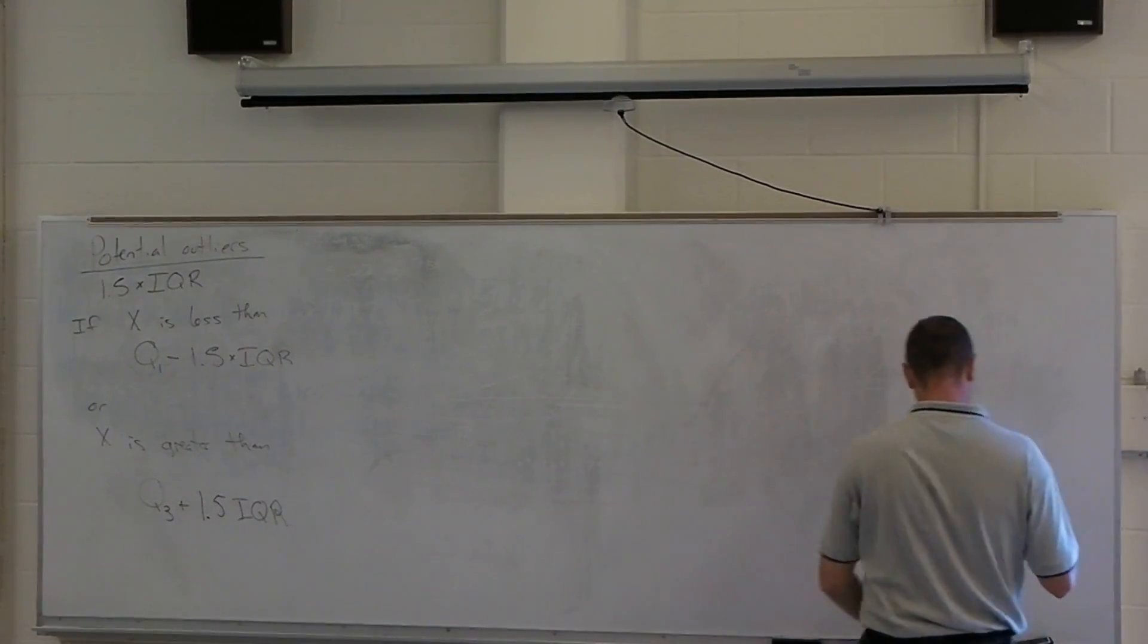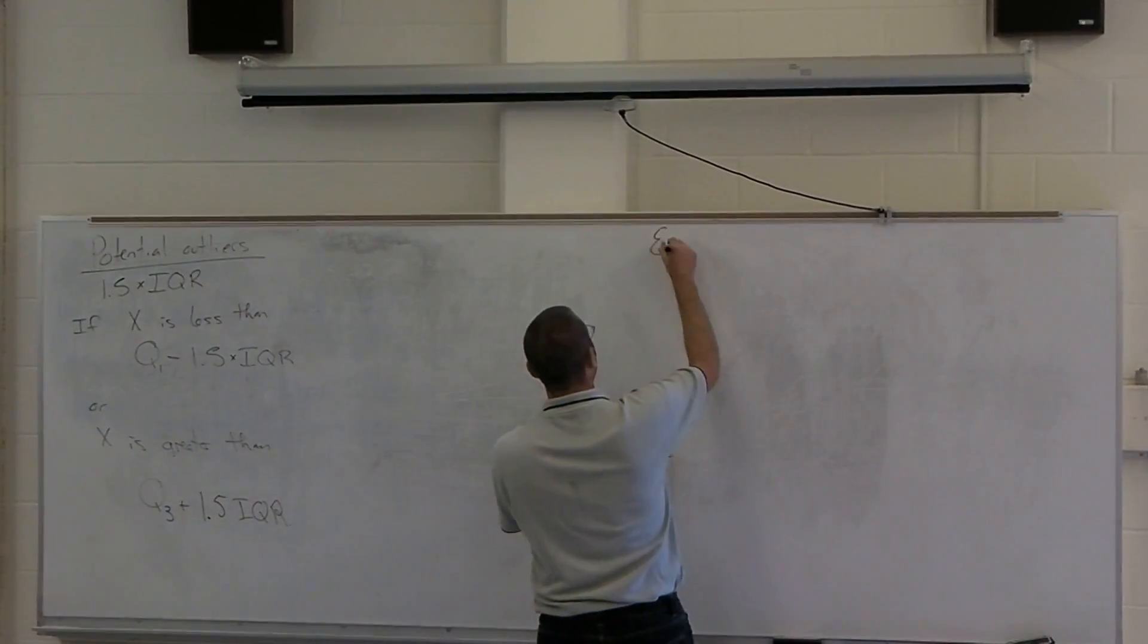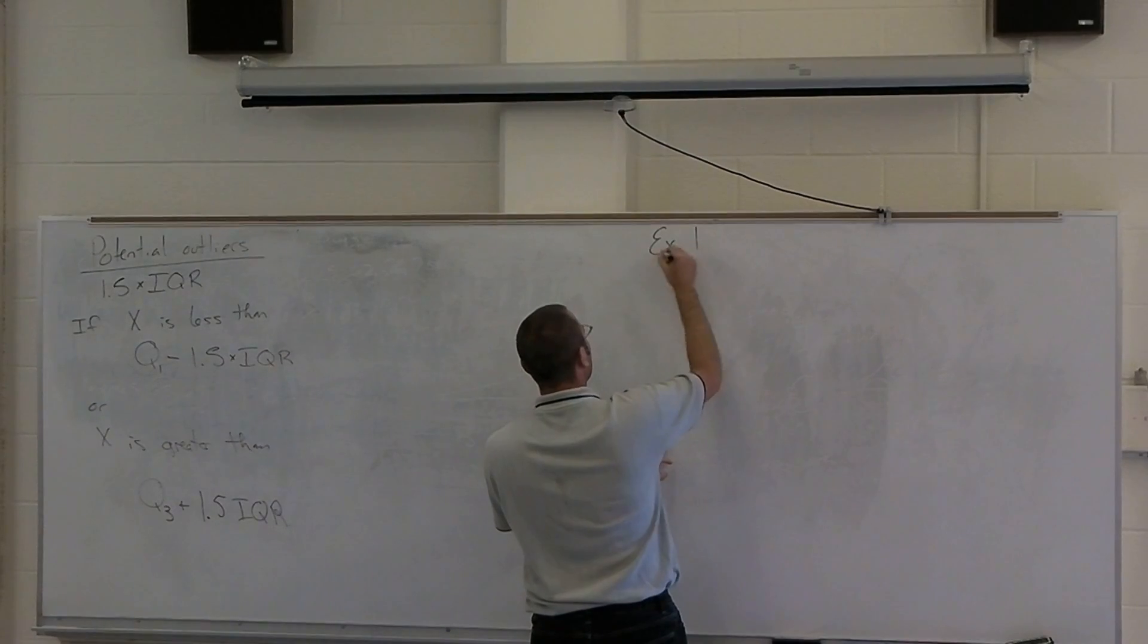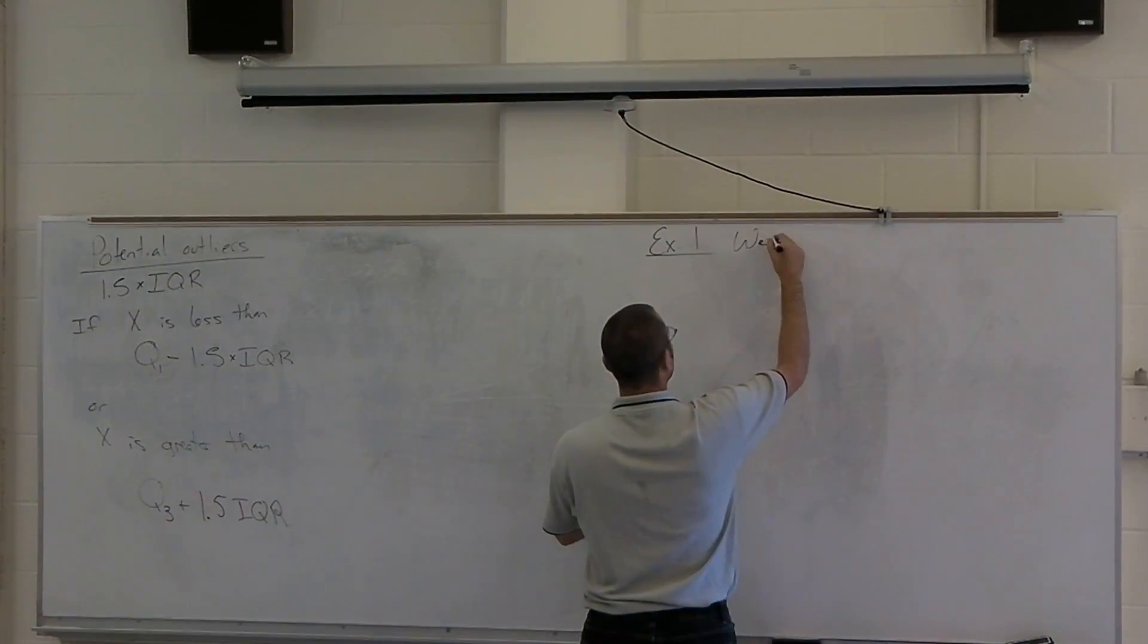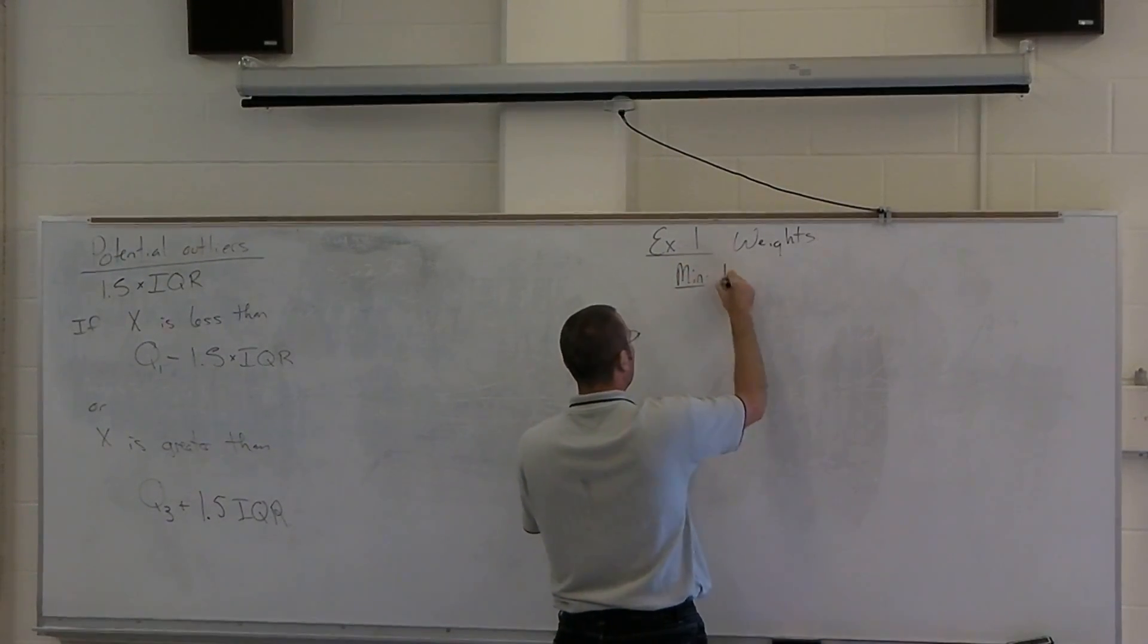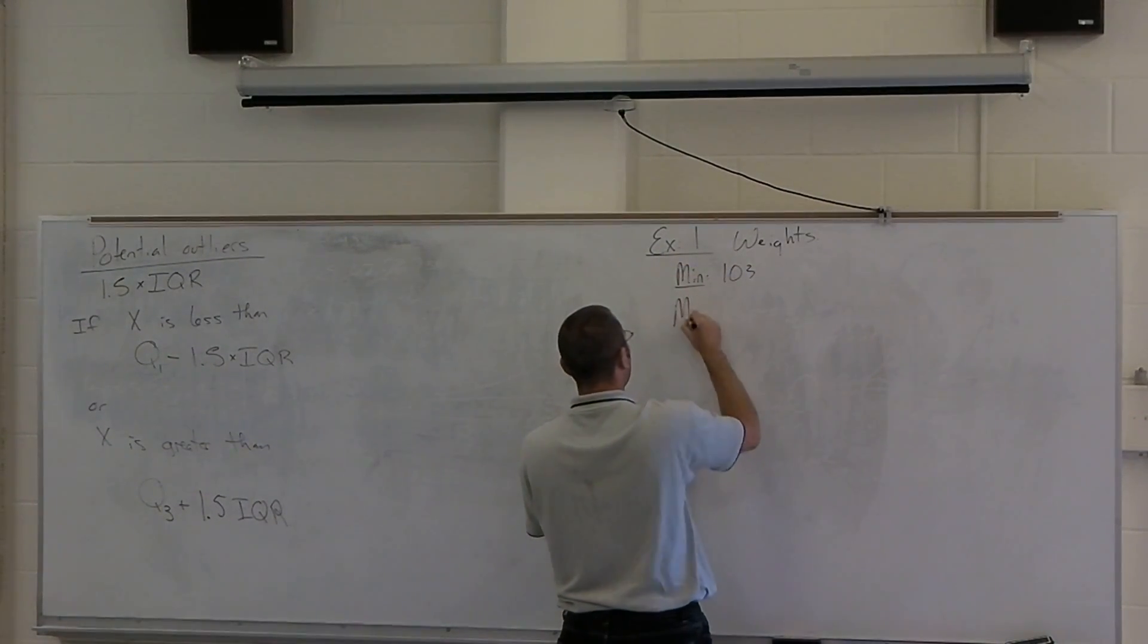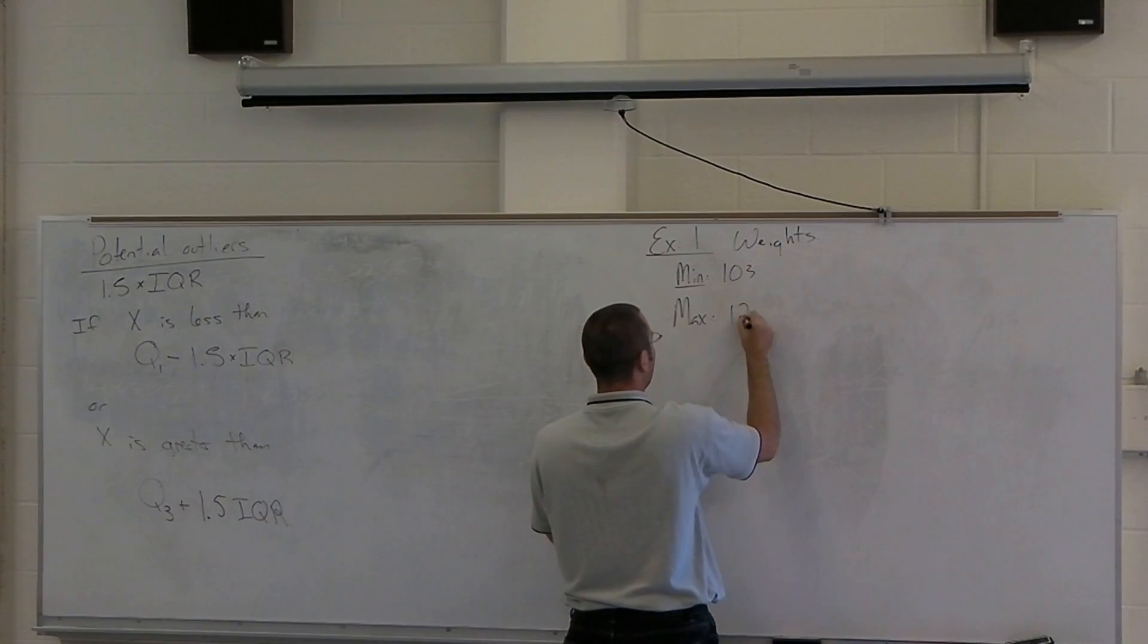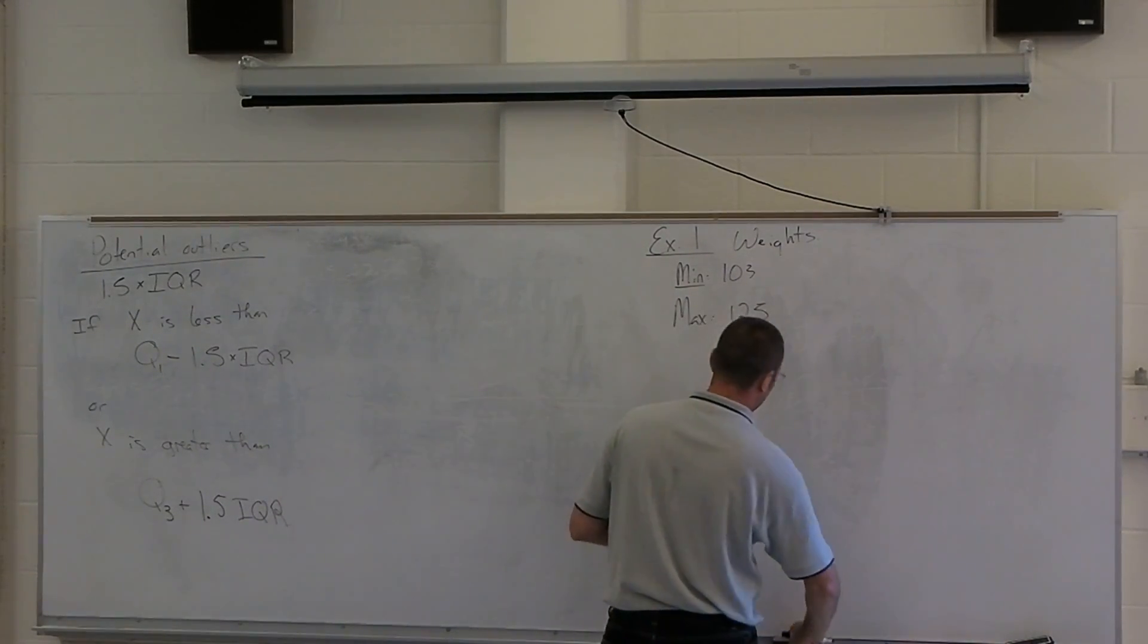So for example 1 of the weights, we have a minimum value of 103, a maximum value of 227.